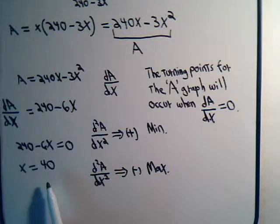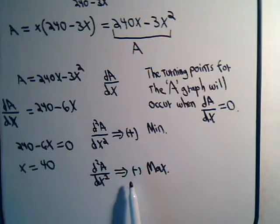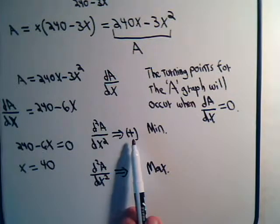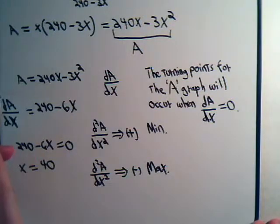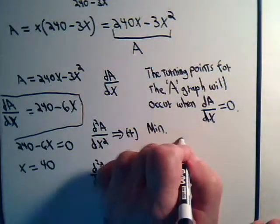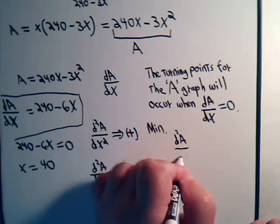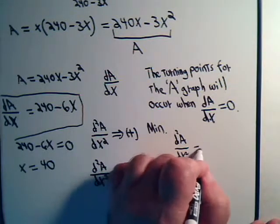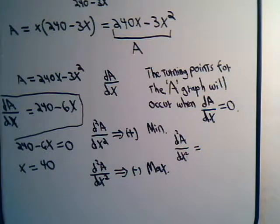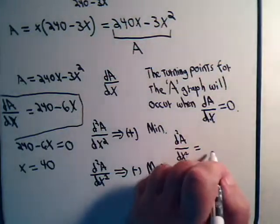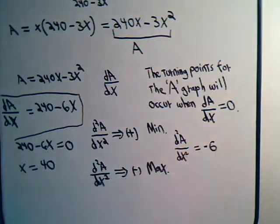Now, at this value of x, then, does that give us a maximum value for the area, or a minimum value for the area? So, here's dA/dx. d²A/dx² will be equal to just minus 6. So, no matter what, that's a negative number. So, clearly then, what we have here is at our turning point here, where x equals 40, that will be for a maximum area.